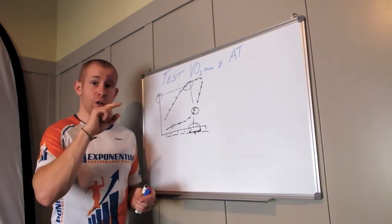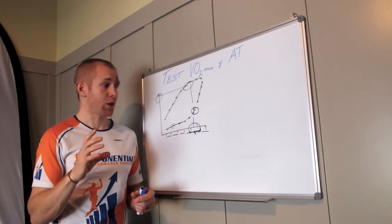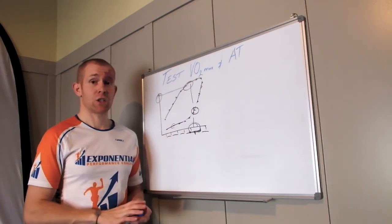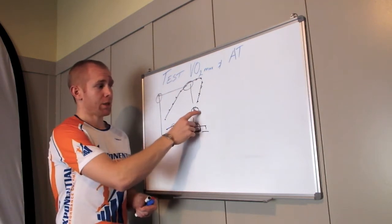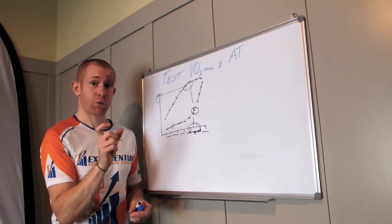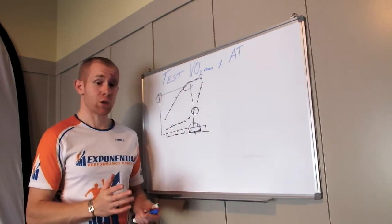There's a whole bunch of different methods you can use to calculate your zones, but I would suggest you use Andy Coggin's 5 zone method. You put in your threshold power, your functional threshold power or heart rate, and it will automatically calculate your training zones for you.